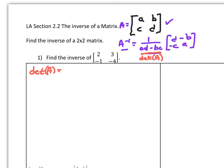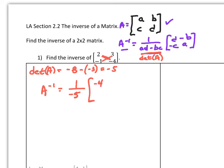The determinant of A: multiply going one way to get negative 8, then subtract what you get going the other way, which is negative 3, ending up with negative 5. So A inverse equals one over negative 5, then we do the switcheroo — swap to get negative 4 and 2, change the signs of the other two, and distribute the scalar to get 4/5, 3/5, negative 1/5, and negative 2/5.